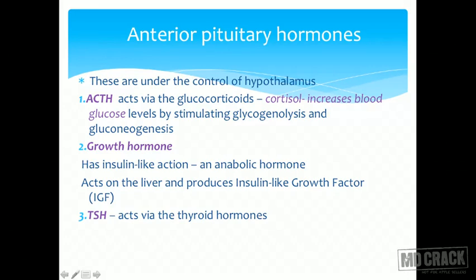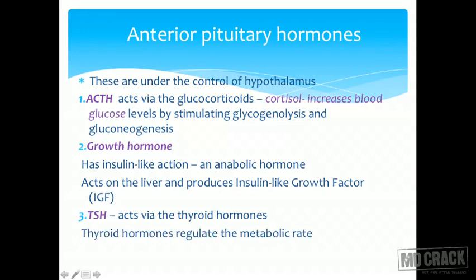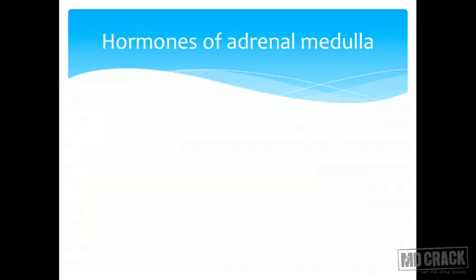TSH — thyroid stimulating hormone — is the anterior pituitary hormone that acts on the thyroid gland to release T3 and T4. These thyroid hormones regulate the metabolic rate; your basal metabolic rate is regulated by thyroid hormones, so all metabolisms are regulated by TSH via T3 and T4.